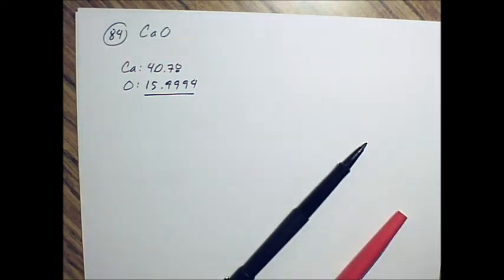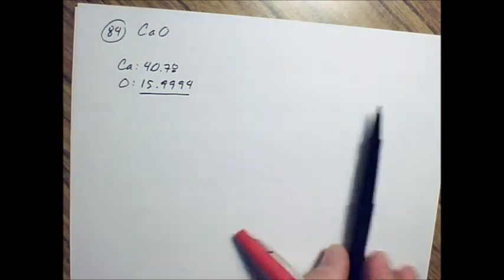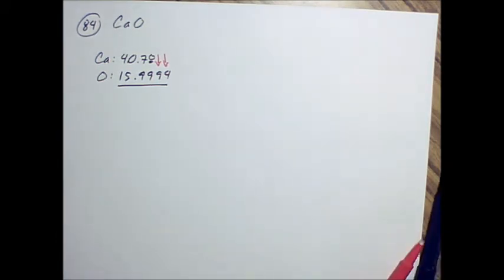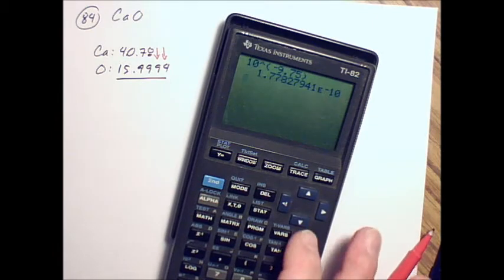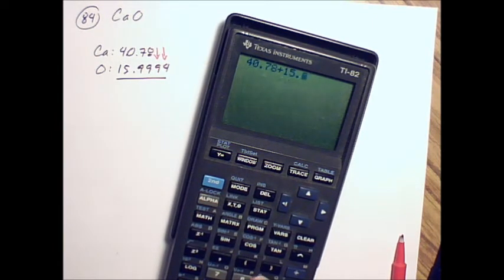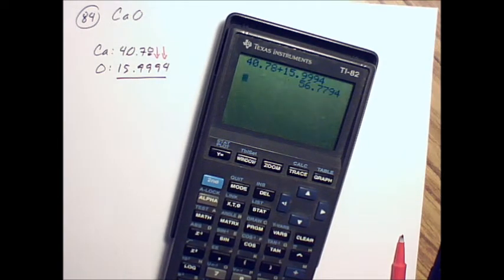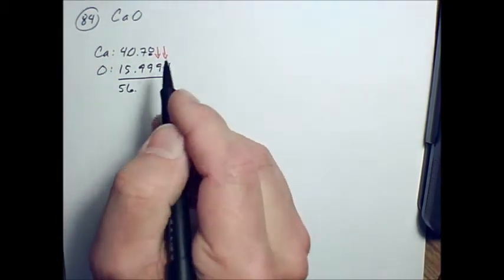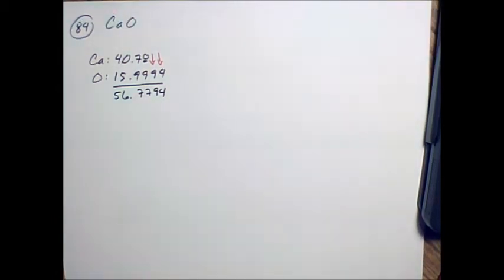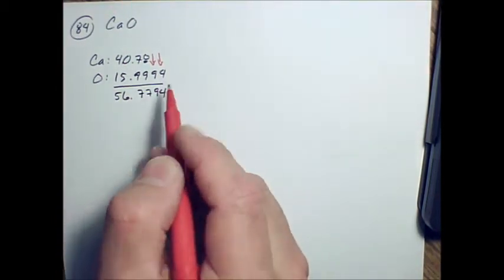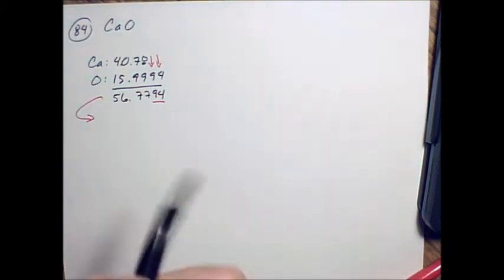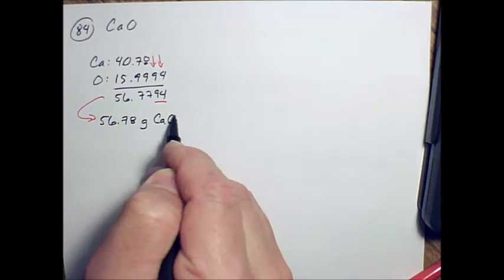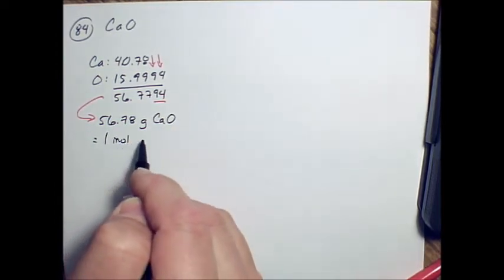We're talking about rounding rules for addition and subtraction a while ago, and this is where this applies. There's a couple of empty slots over here. So you want to add these two together. You can use your calculator. Because these two digits here were added to empty slots, we're going to round them off. And we get 56.78 grams calcium oxide equals one mole of calcium oxide.